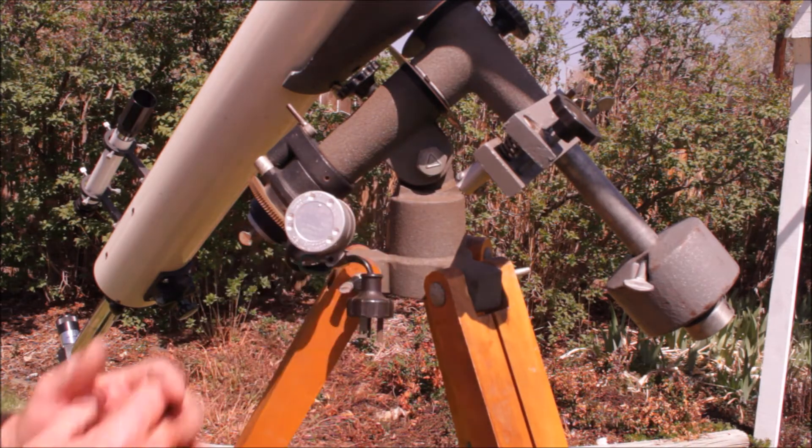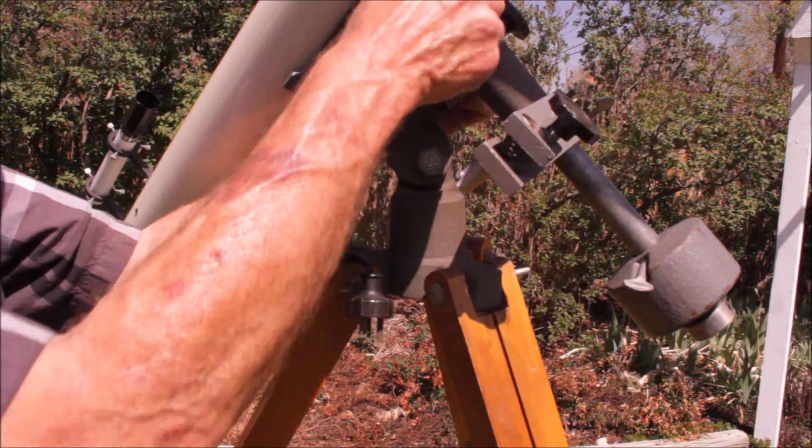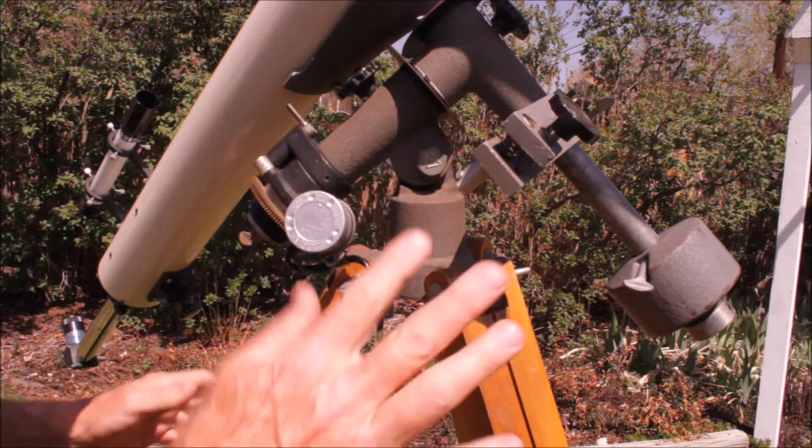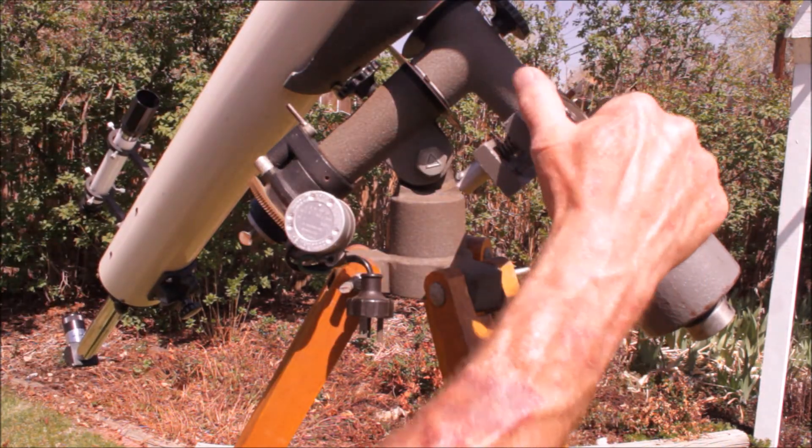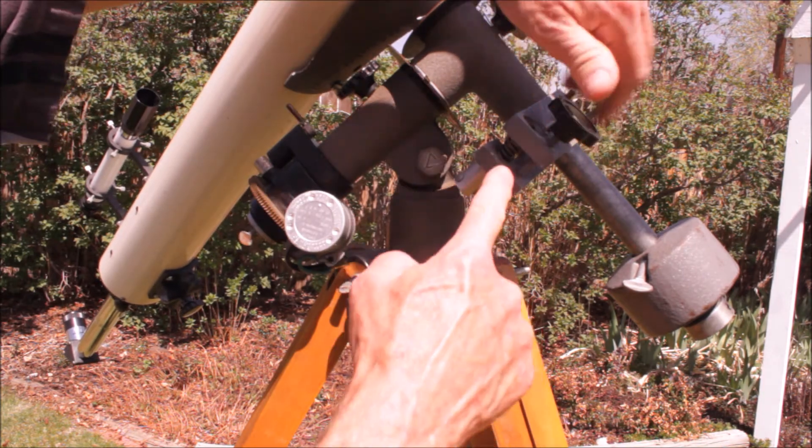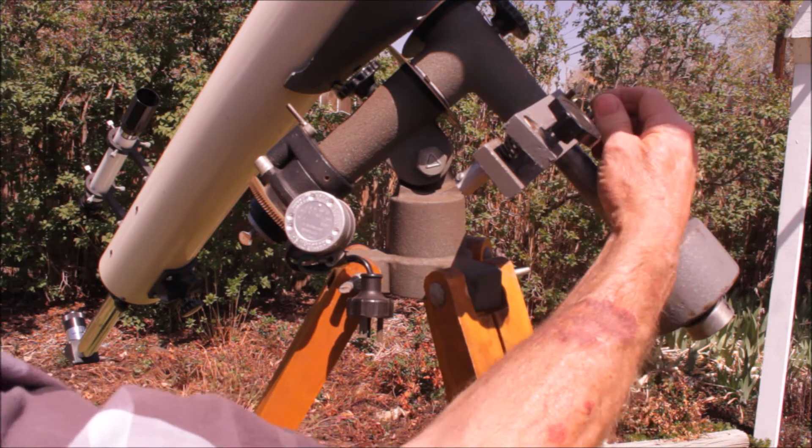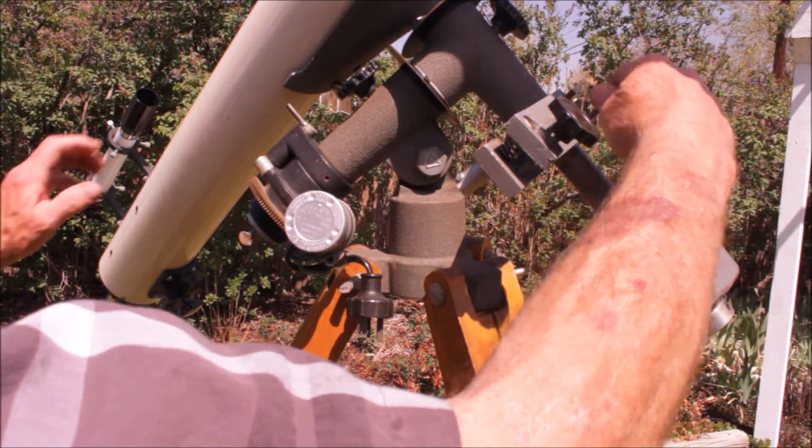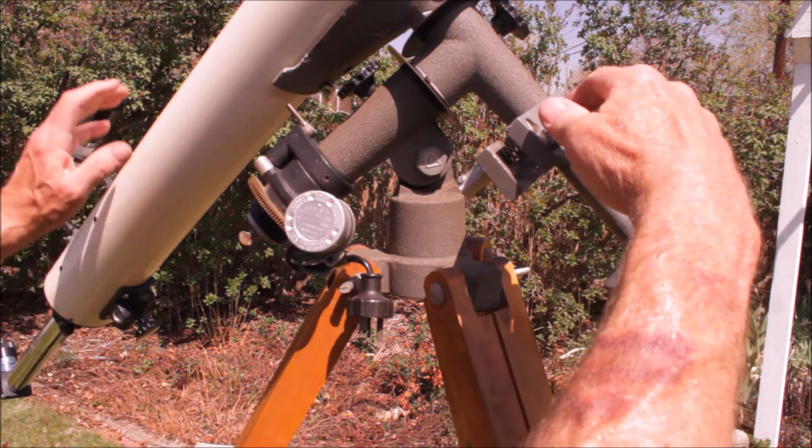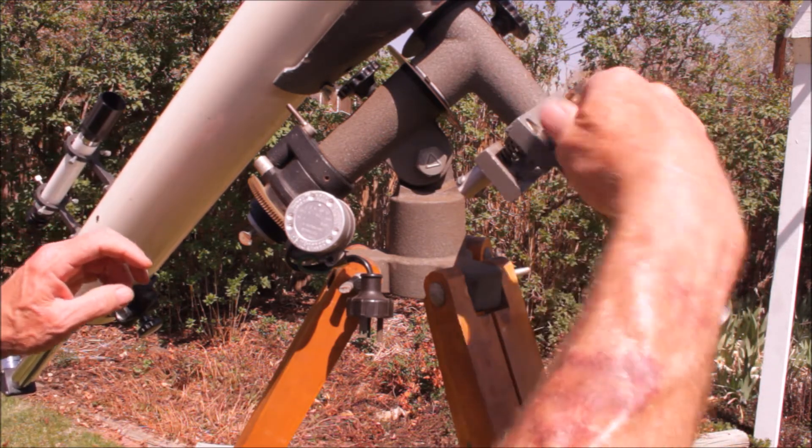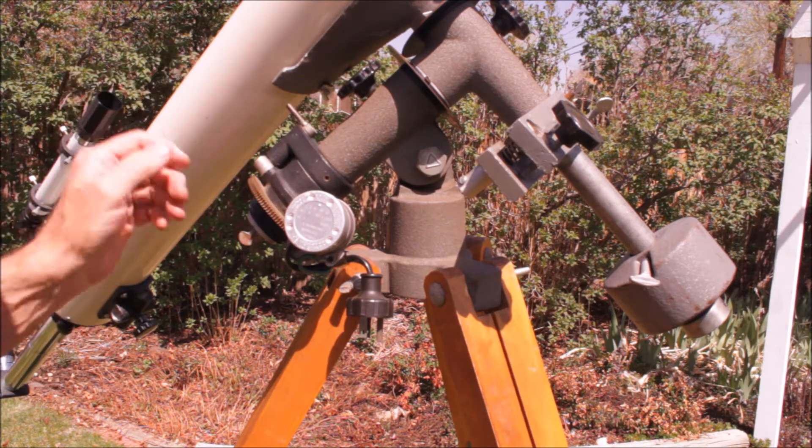Let's have a look at some of the features of this mount. First of all, though it's very basic in its construction, it does have setting circles up here and setting circles here. Very nice. It's got a slow motion here. This is declination slow motion only. You can see when I turn this crank, it's moving this little tangent arm here. Tighten the tangent arm down there. Tighten it to the axis. If you want to free it up, you free it up and then you can move the scope wherever you want. And you'll lock it down, and then it's engaging this to move your right ascension. So that's a very simple but fairly effective tangent drive.